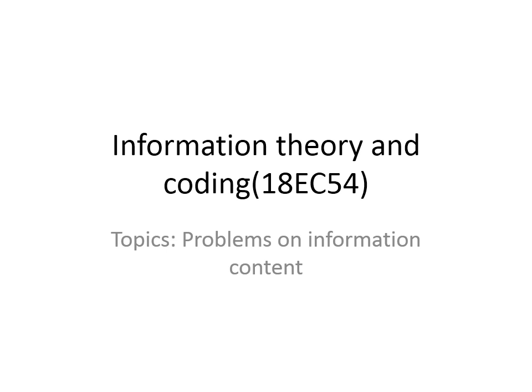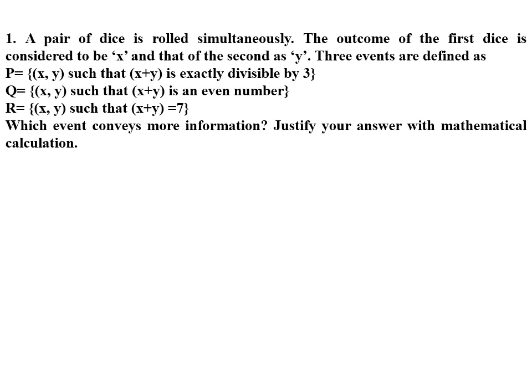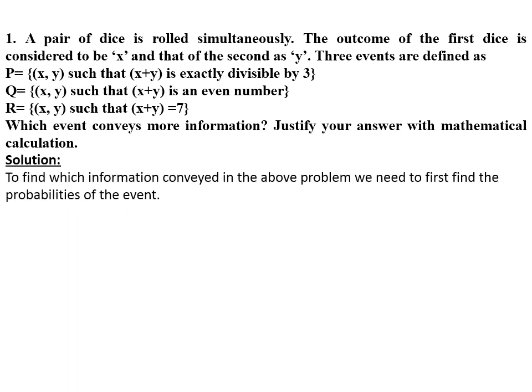This video lecture is on the subject Information Theory and Coding. In this lecture we are going to discuss problems on information content. First problem: a pair of dice is rolled simultaneously. The outcome of the first dice is considered to be x and the second is y. Three events are defined: event P is {x, y} such that x+y is exactly divisible by 3; event Q: {x, y} such that x+y is an even number; event R: {x, y} such that x+y equals 7. Which event conveys more information? Justify with numerical calculation.